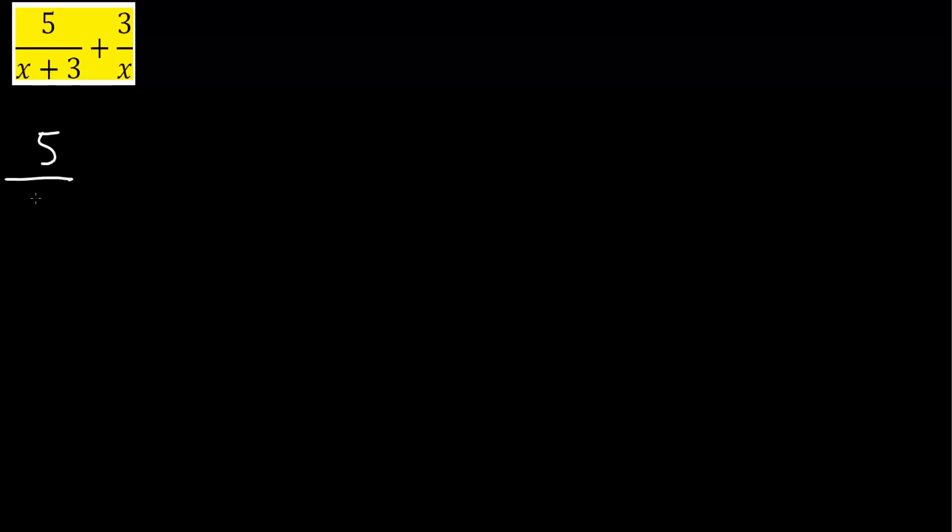We get 5 divided by x plus 3 and the trick is we multiply by this term, top and bottom. So we say times x divided by x. So x divided by x is simply 1 plus 3 divided by x. This right here times this term x plus 3. So we get x plus 3 divided by x plus 3, which is simply 1. So we're not changing anything.